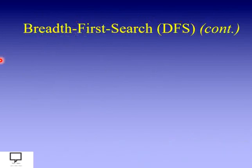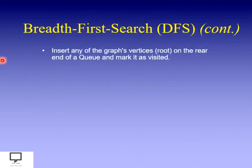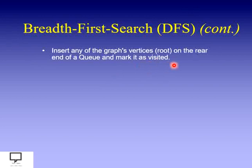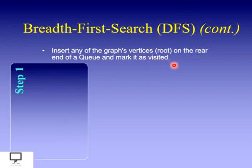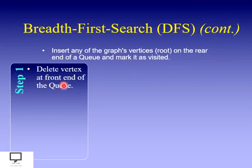Let's see the algorithm for BFS traversal. The very first step is to insert any arbitrary starting node of the graph at the rear end of the queue and mark it as visited. Then delete the vertex from the front end of the queue — that first inserted element from which you start BFS — delete and display it.